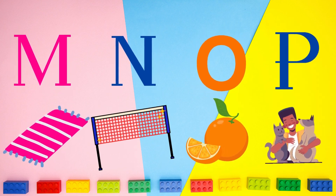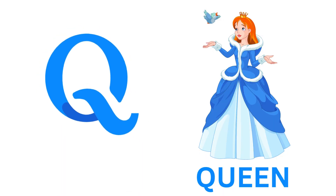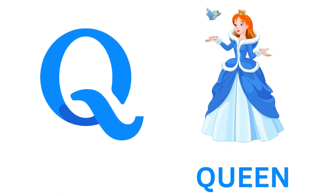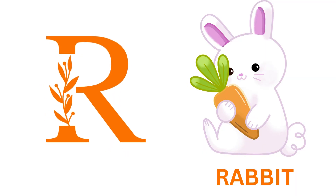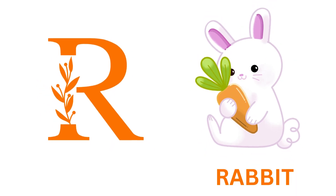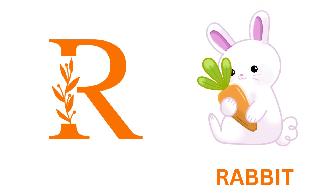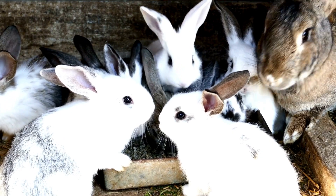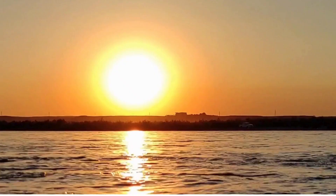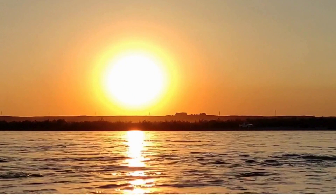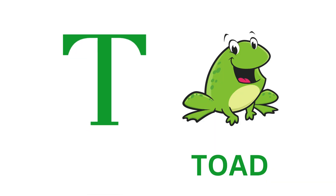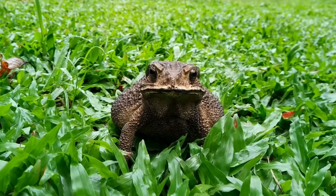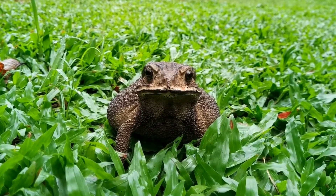Q is for Queen, Q-Q-Queen. R is for Rabbit, R-R-Rabbit. S is for Sun, S-S-Sun. T is for Toad, T-T-Toad.